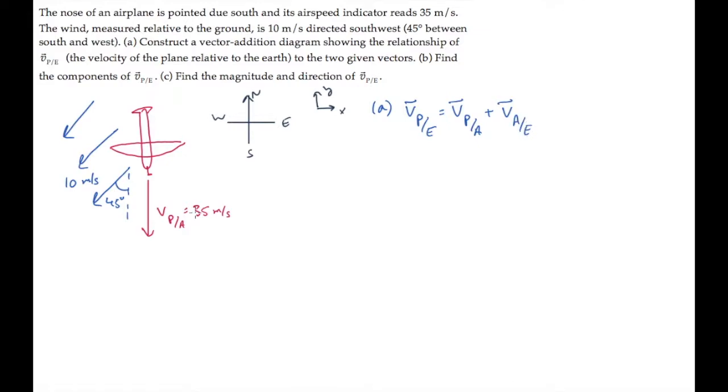Carefully notice the order of the subscripts here. On the left, plane relative to earth, p and e, are the first and last subscripts on the right-hand side, and the two middle subscripts match. That pattern always holds for relative velocity equations. We can draw these now.